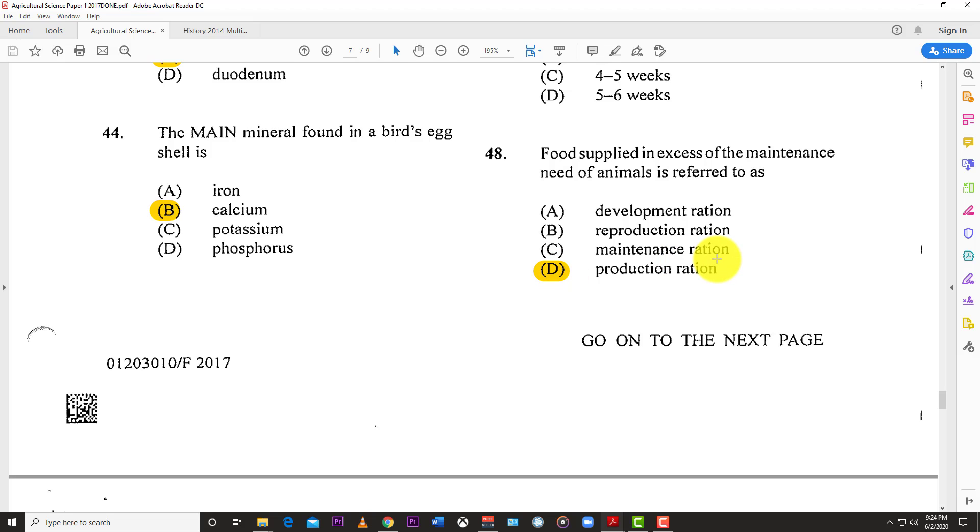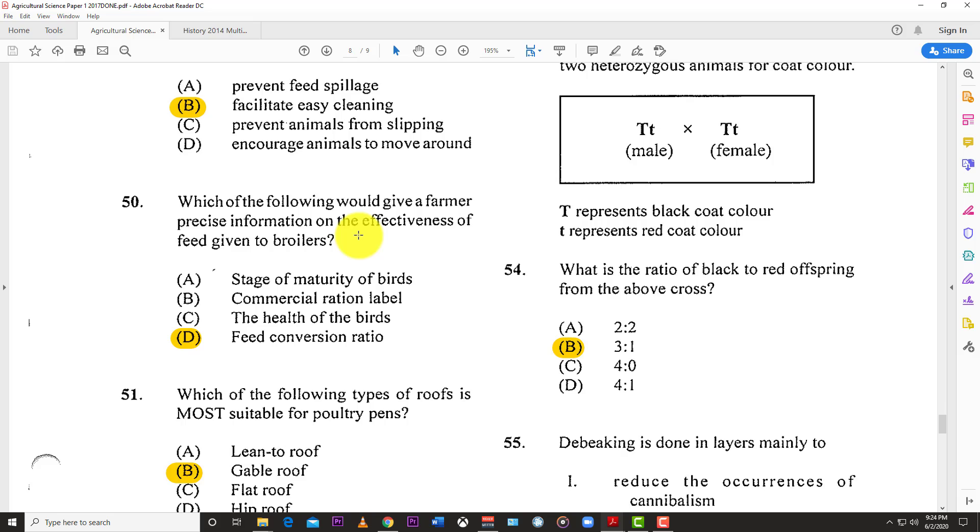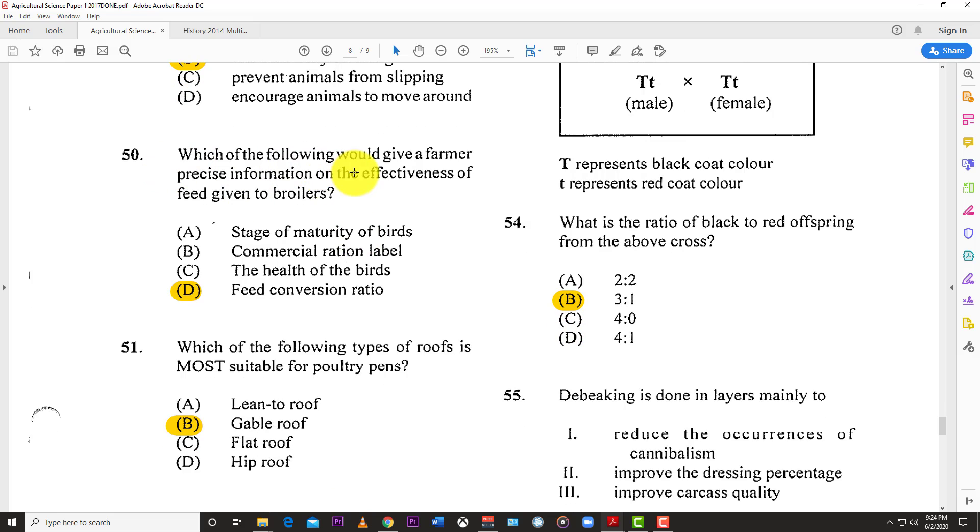Number forty-seven: At which stage of growth would a broiler bird require the highest percentage of protein? The answer is one to three weeks, because that's when the bird is developing. Protein is used to build muscle mass and help develop the organs and tissues properly.